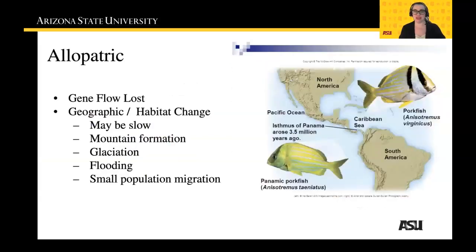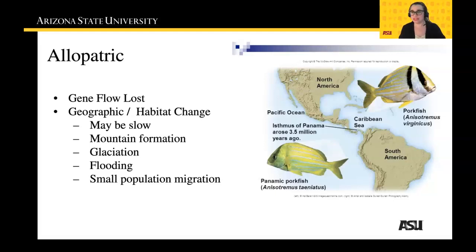Allopatric speciation occurs when the habitat or geographic environment changes. In the beginning, these fish come from an ancestral population of pork fish. Over time, they used to be able to swim across where the isthmus of Panama was. As the world evolved and the continents changed and shifted, mountain areas created the isthmus of Panama connecting North and South America, and there is no longer interbreeding between the Caribbean Sea and Pacific Ocean. This landlock keeping the Pacific Ocean and the Caribbean Sea separate has created a divergence in the habitats of these two pork fish populations.